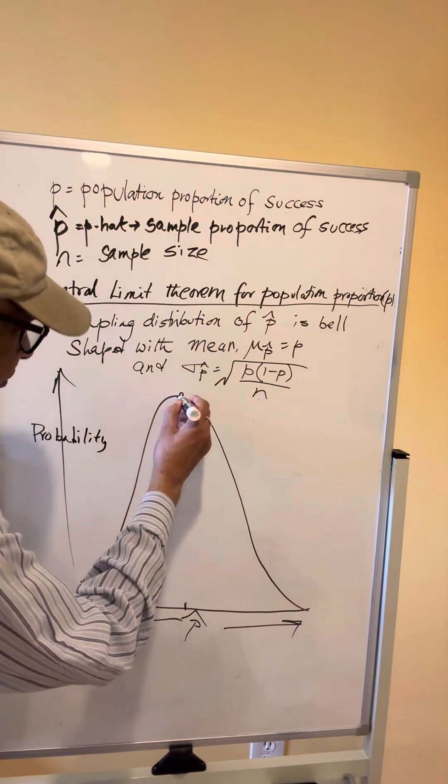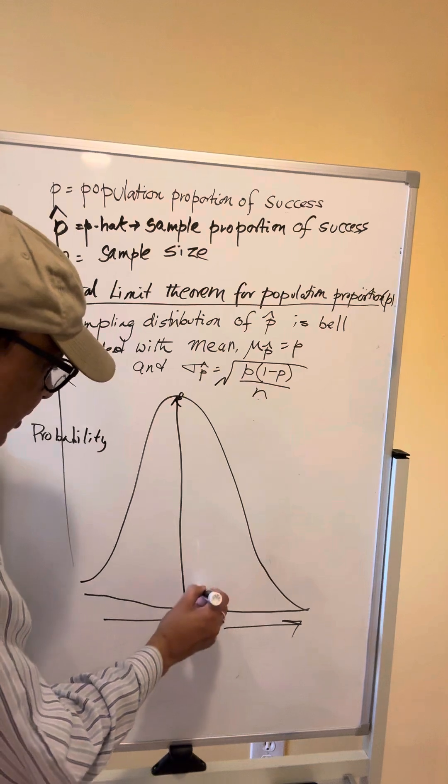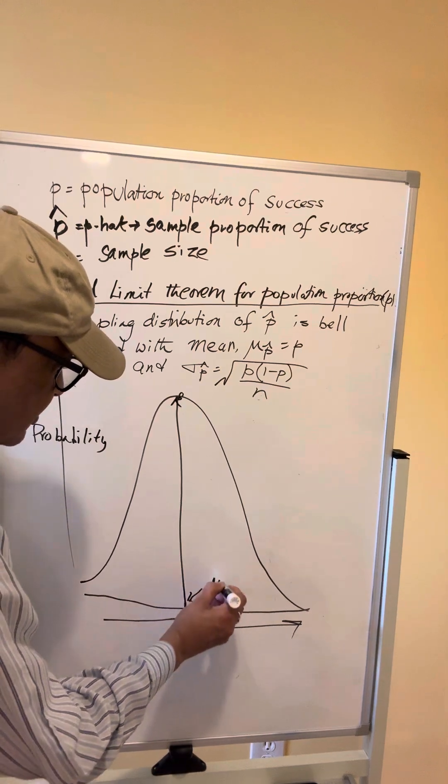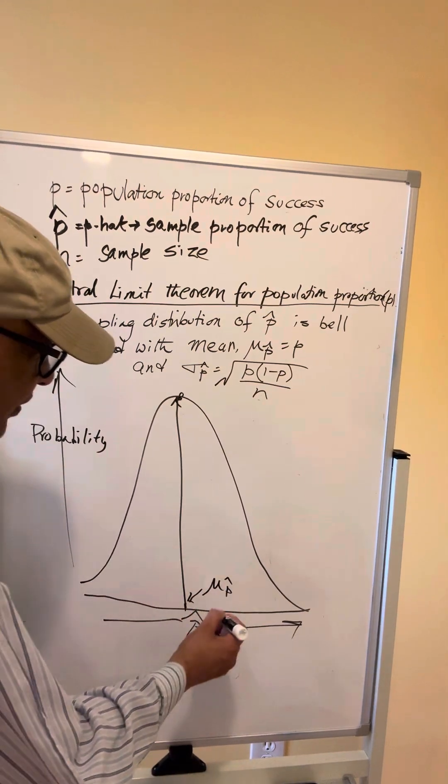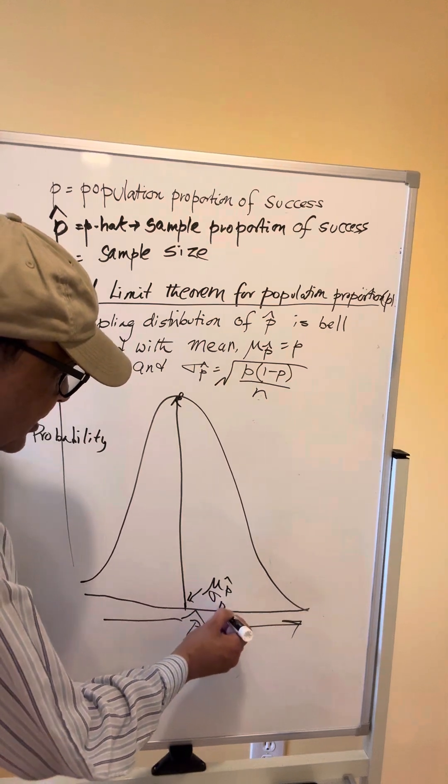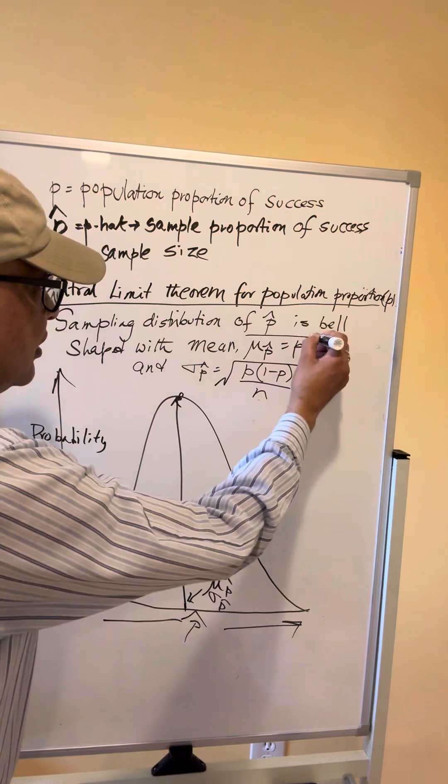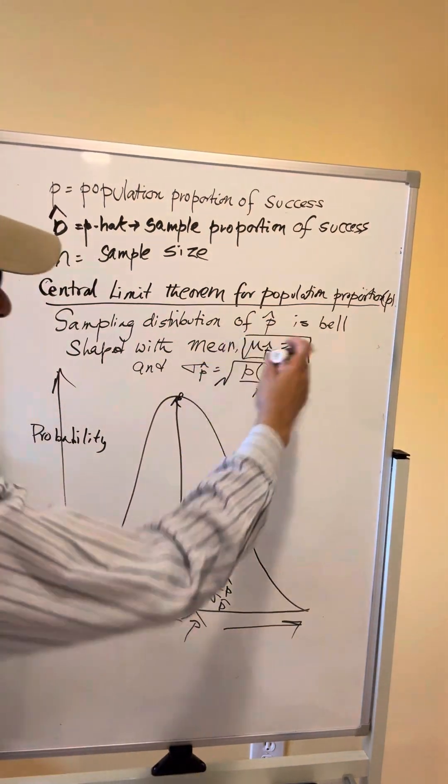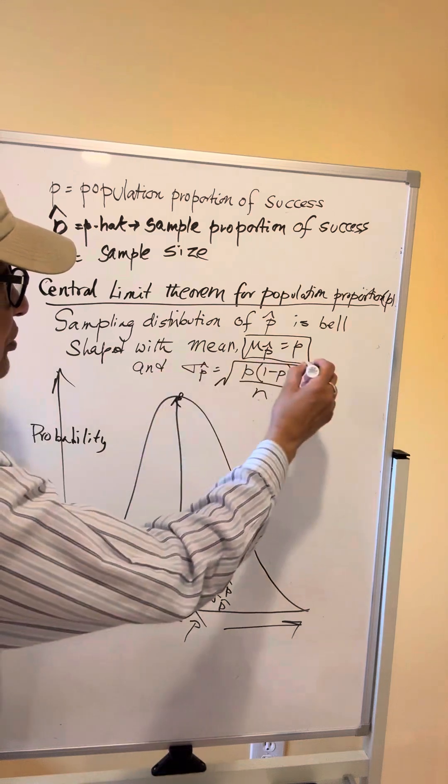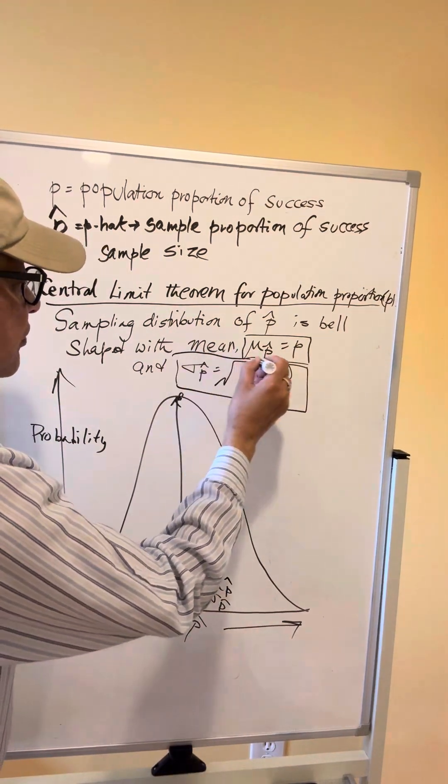This is the center of the distribution and this is mu P hat, the mean, and sigma P hat is the standard deviation of this distribution. The Central Limit Theorem states that the mean is equal to the population proportion and sigma P hat is given by this formula.